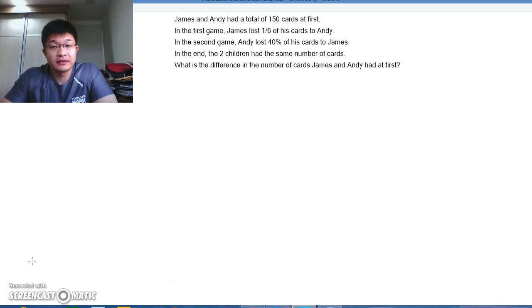James and Andy had a total of 150 cards at first. In the first game, James lost 1/6 of his cards. In the second game, Andy lost 40% of his cards to James. In the end, the two children had the same number of cards. What is the difference in the number of cards James and Andy had at first?